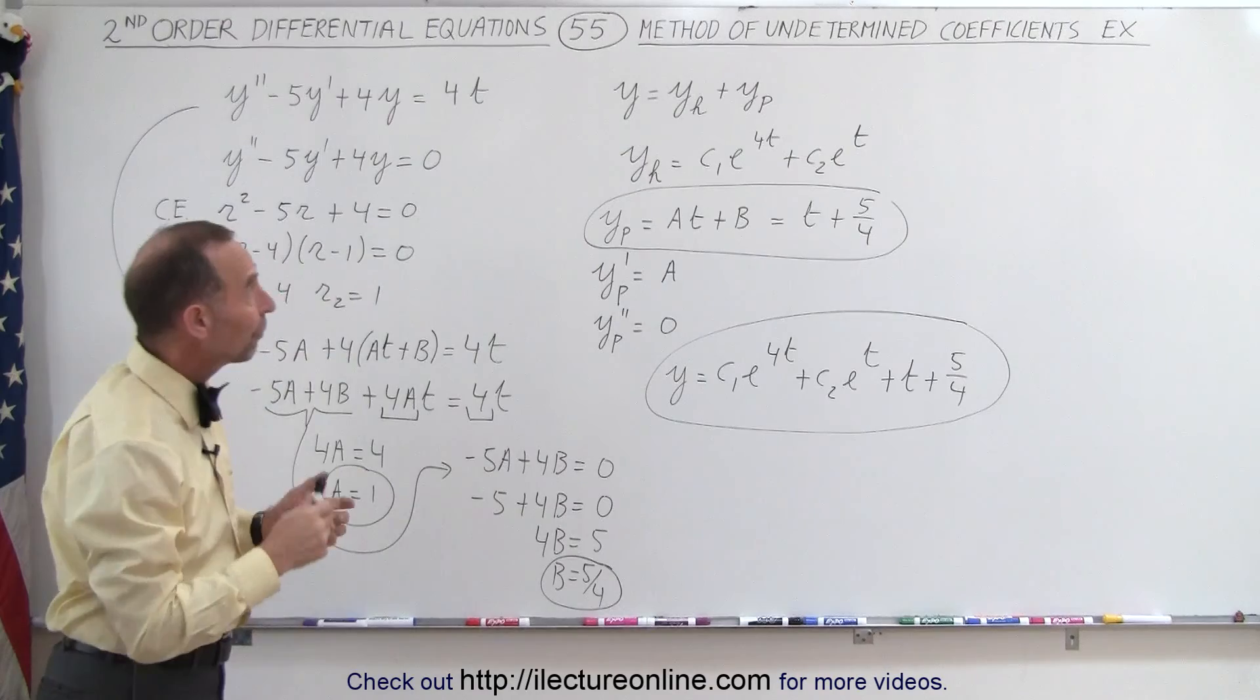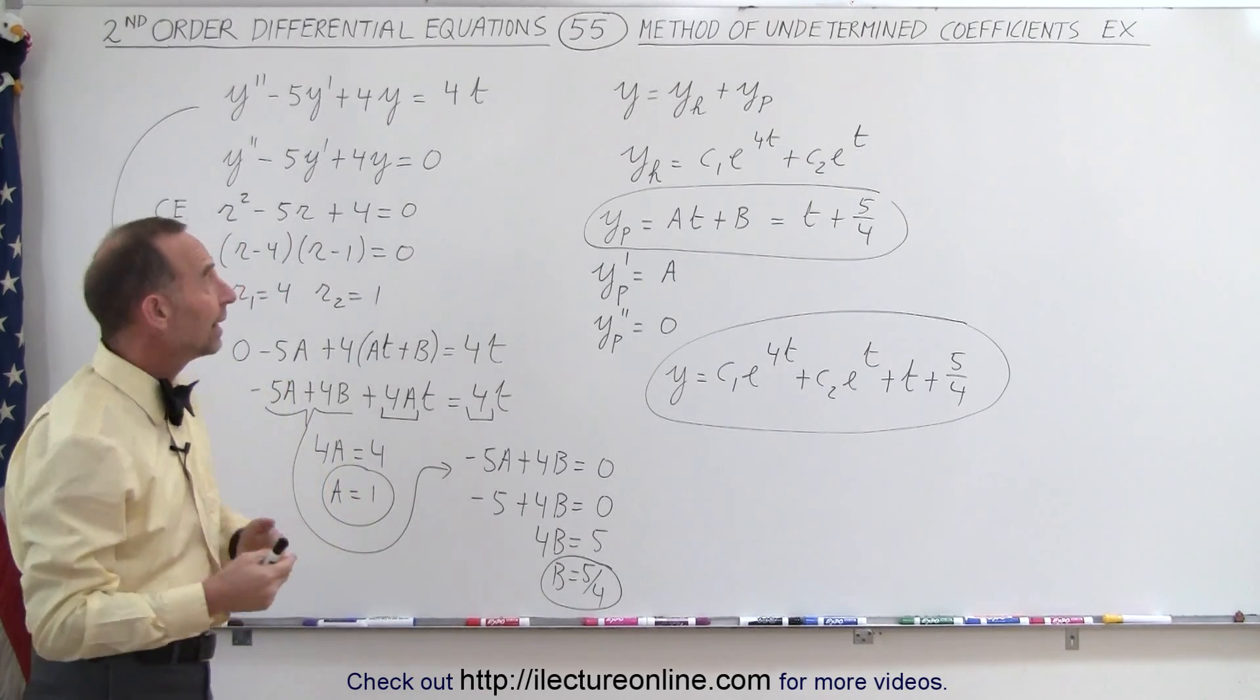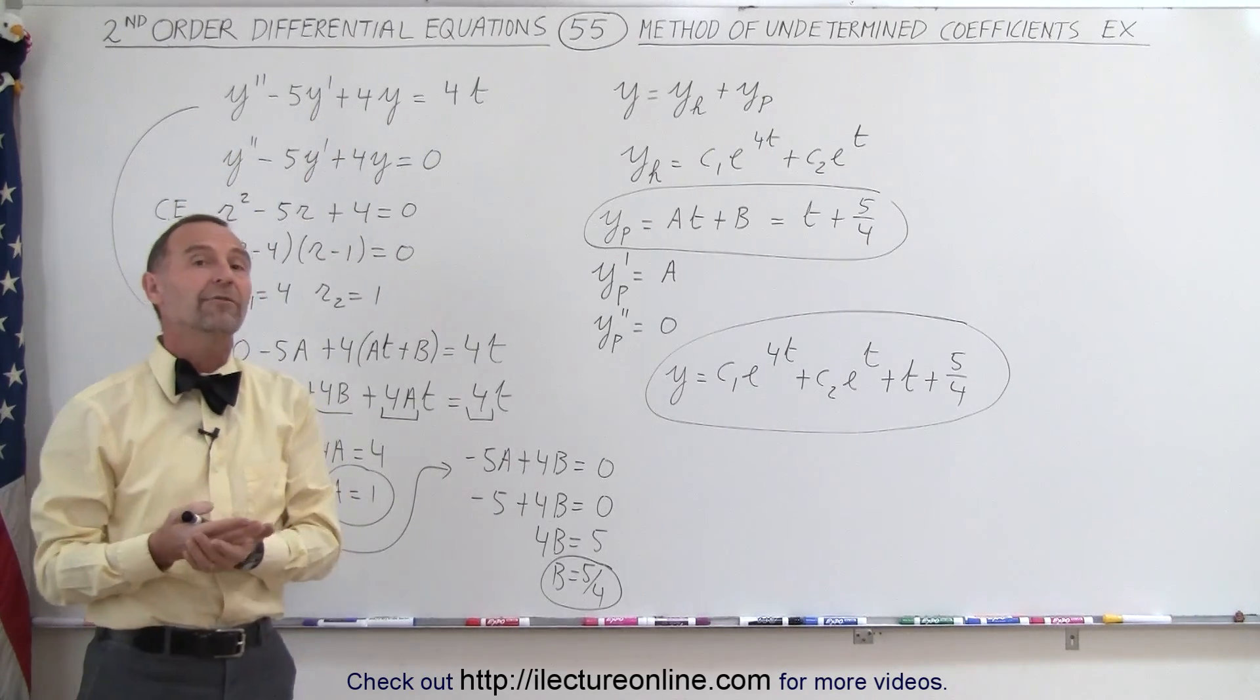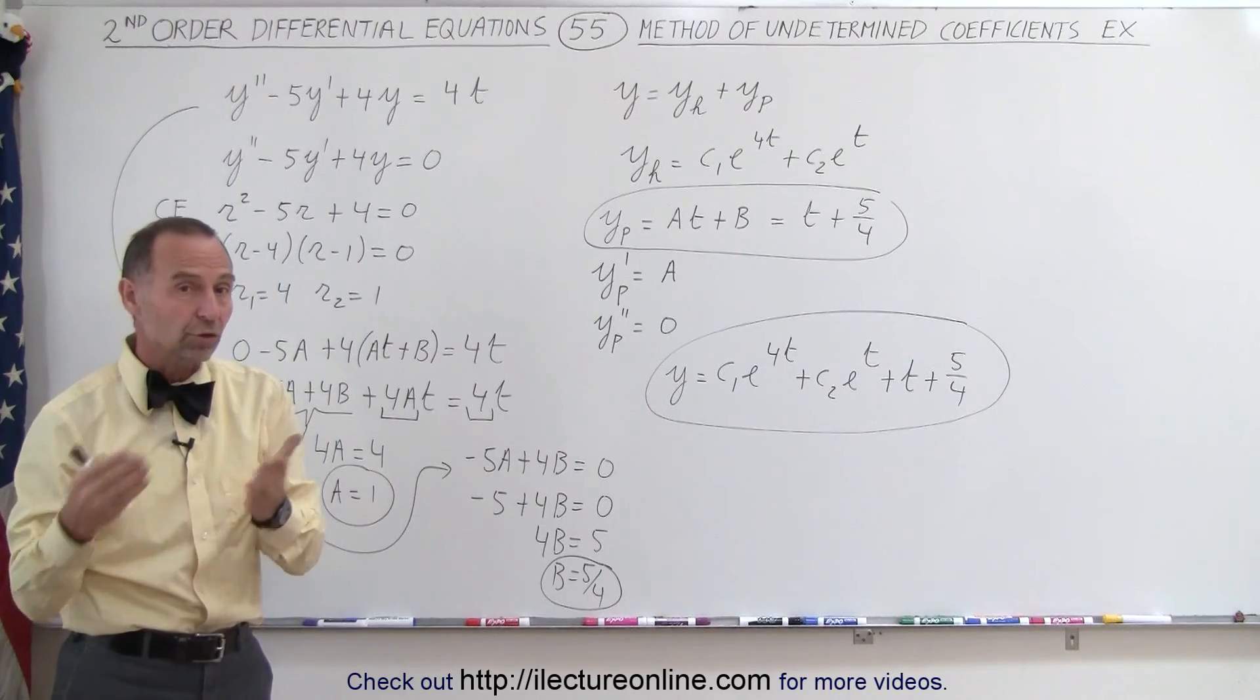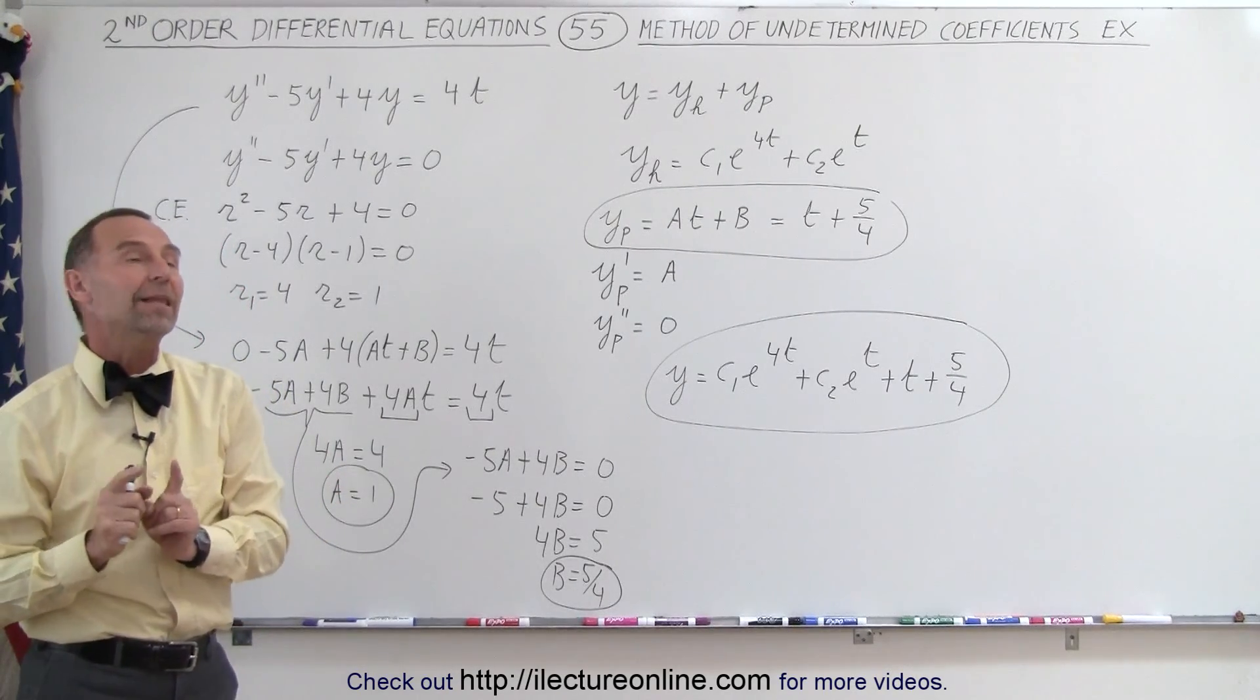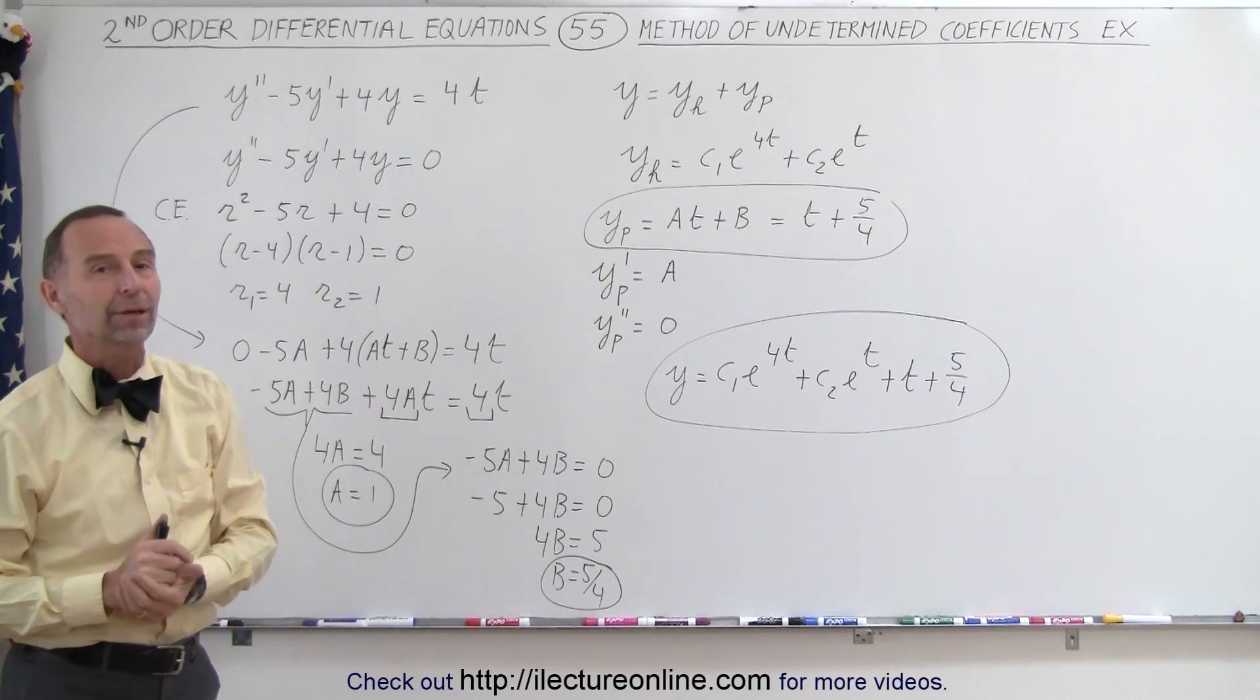So the method of undetermined coefficients is by far the best method if indeed the coefficients are constant. Now using the method of variation of parameters, it's a little bit more involved, and we'll see in just a moment how that is. But the advantage of that method is that the coefficients do not need to be constant in order to employ that method.